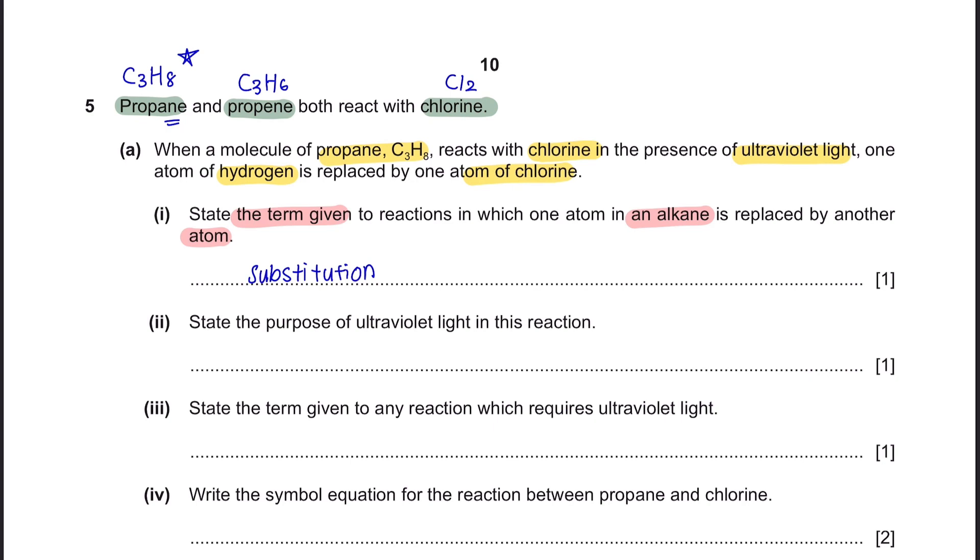Part 2: State the purpose of ultraviolet light in this reaction. The purpose of the UV light is to provide activation energy. Part 3: State the term given to any reaction which requires UV light. When there's presence of UV light, we call this type of reaction a photochemical reaction.